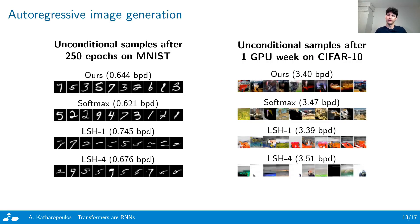To evaluate our autoregressive formulation, we train transformer models for autoregressive image generation on MNIST and CIFAR-10. For all transformer variants, we use the same network architecture with the only difference being the computation of the attention function. For MNIST, we train all models for 250 epochs, while for CIFAR-10, we limit our computational resources to one week of GPU time.